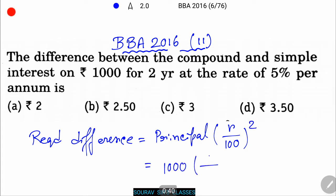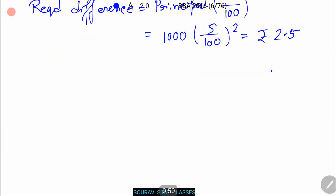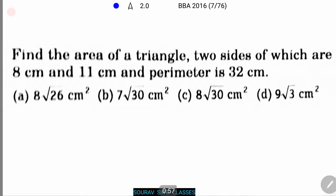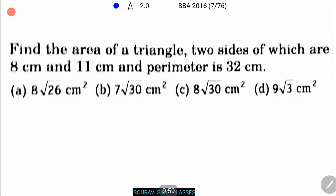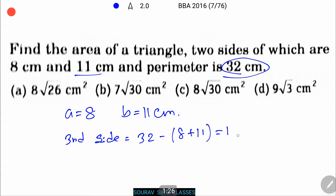Next problem: Find the area of a triangle, two sides of which are 8 centimeter and 11 centimeter, and the perimeter is 32 centimeter. Here are the four options. The perimeter of the triangle is 32 centimeter. Therefore, a equals 8 centimeter and b equals 11 centimeter. Now, the third side will be third side equals 32 minus 8 plus 11, that equals 13 centimeter.